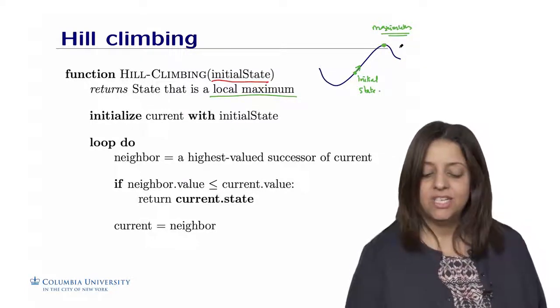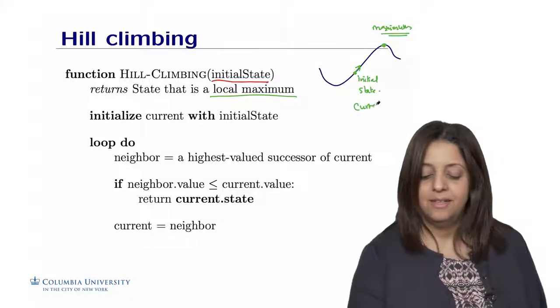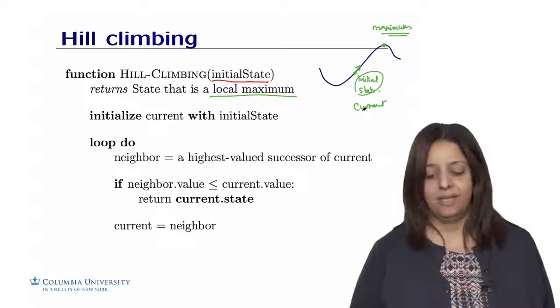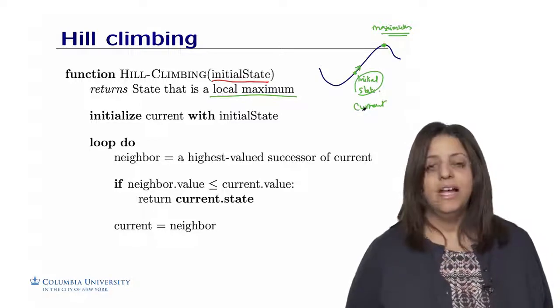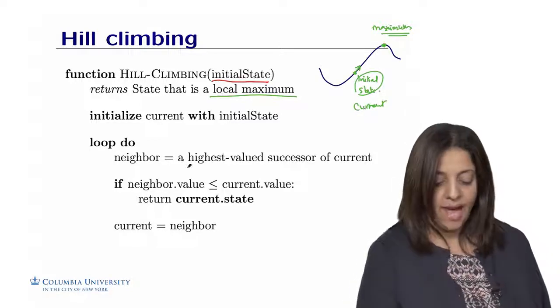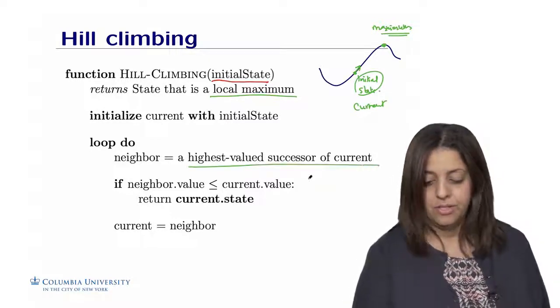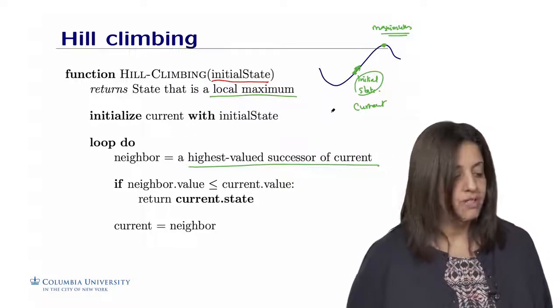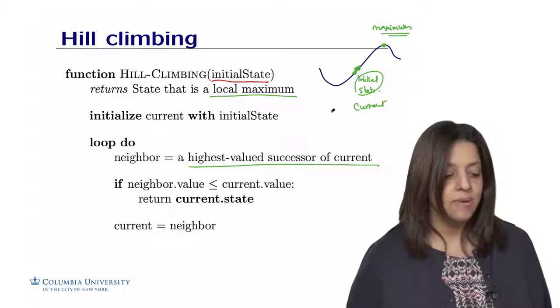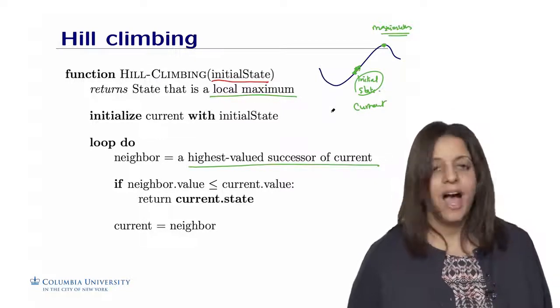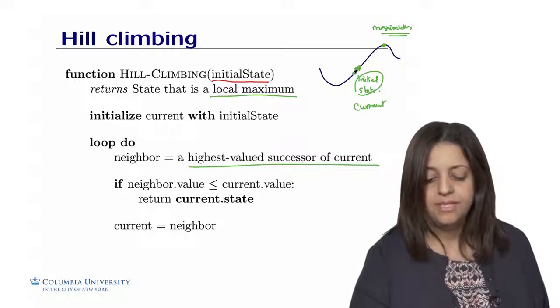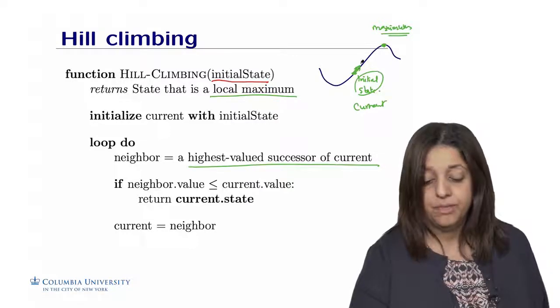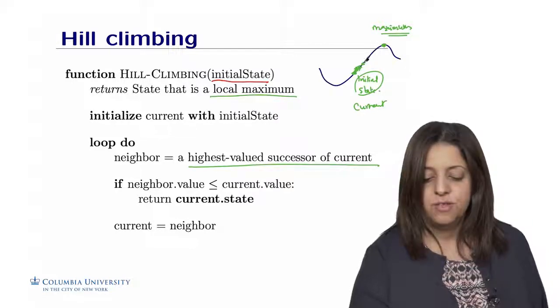We start with initializing the current state as the initial state. The idea is to look in the neighbors and pick the highest valued successor of the current. So I'm going to pick the neighbors here and pick this one. And at each point, the current node is replaced by the neighbor with the best or with the highest value. So I'm going to replace this element here, the current node, by this one and then by this one, et cetera.